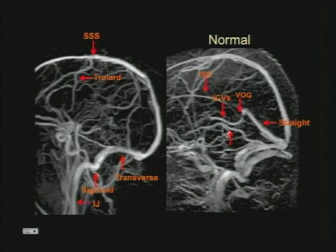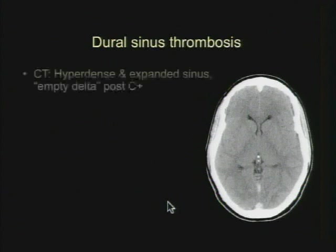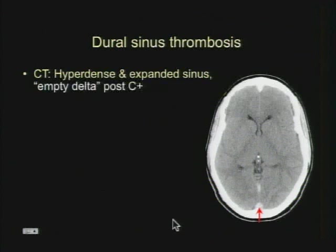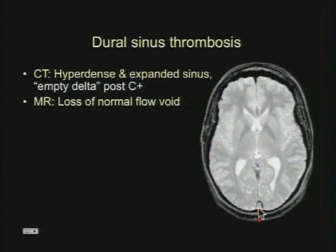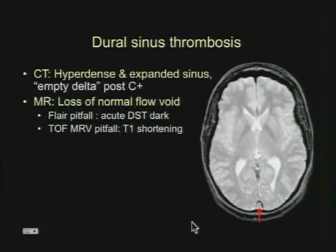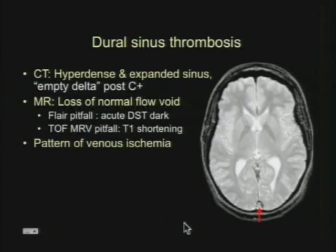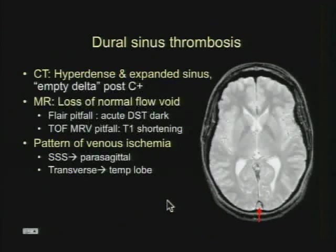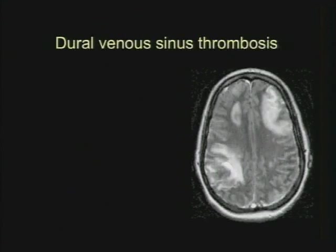On CT, dural sinus thrombosis presents as a hyperdense and expanded sinus. On post-contrast images, you may see the empty delta sign. On MRI, you'll lose the flow void. Look out for the pitfall with acute dural sinus thrombosis — when doing time of flight, T1 shortening can mimic flow-related enhancement. The patterns of venous ischemia: superior sagittal sinus thrombosis is often parasagittal; transverse sinus thrombosis often causes abnormality in the temporal lobe; deep sinus thrombosis — look for bithalamic abnormality. It's often overlooked, so keep this one in mind.